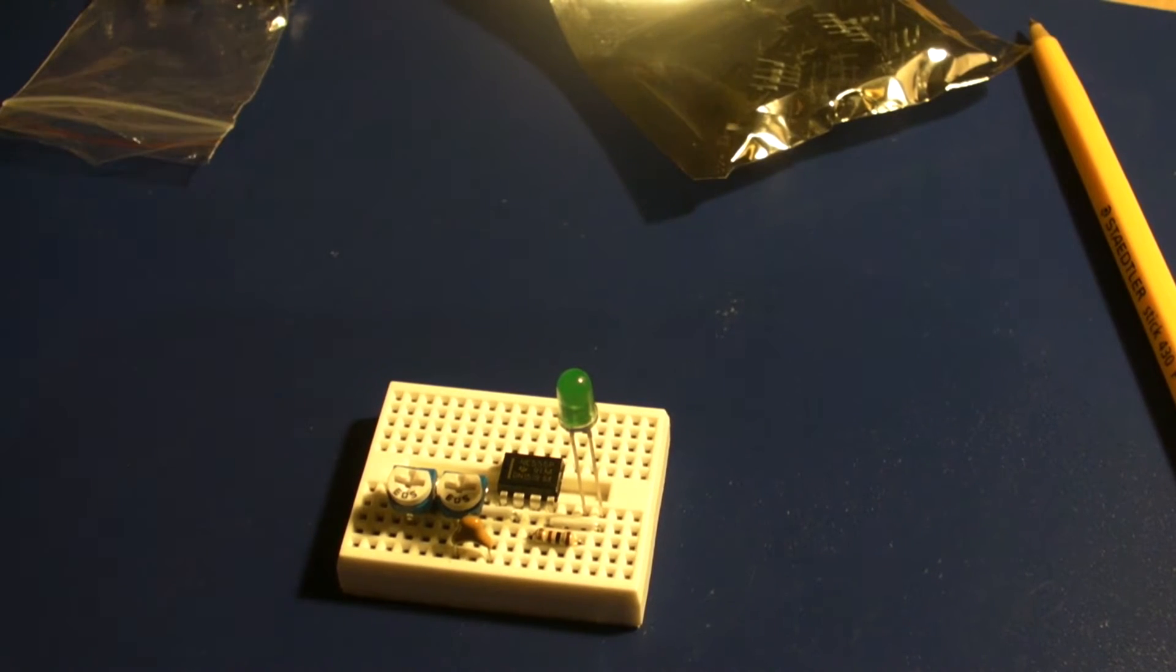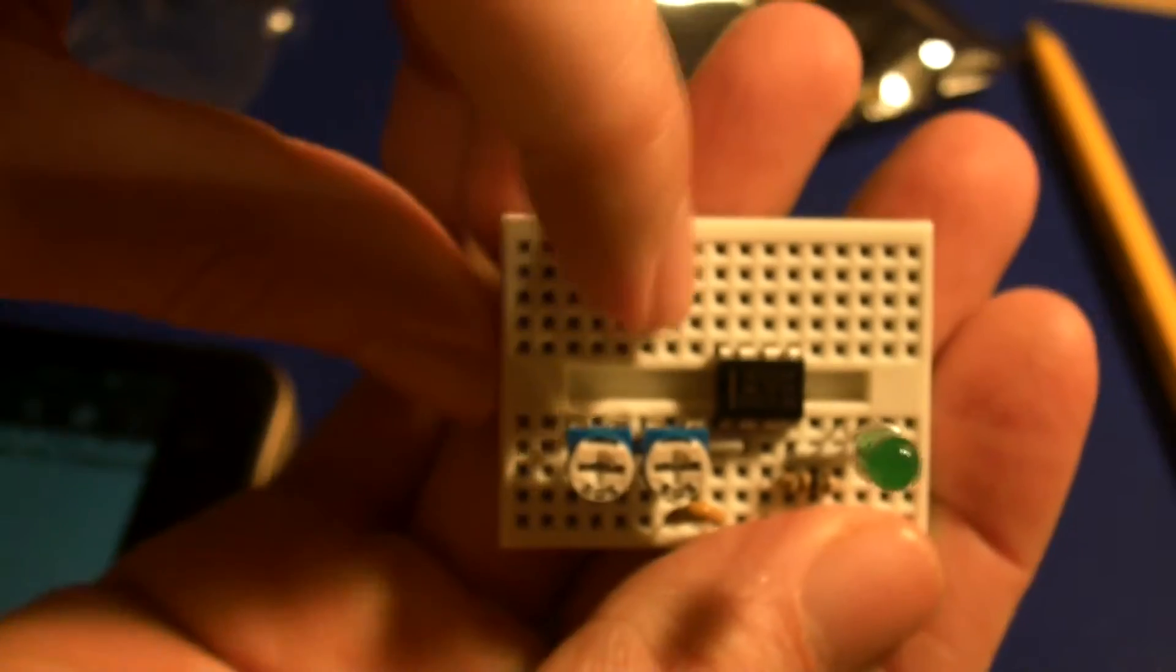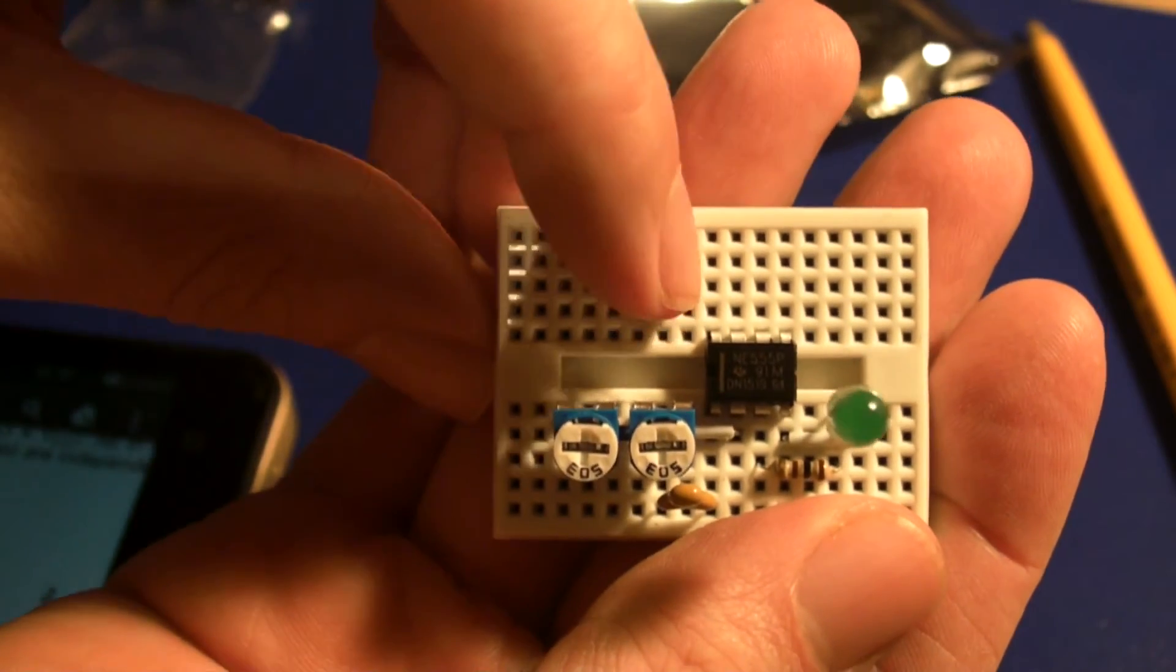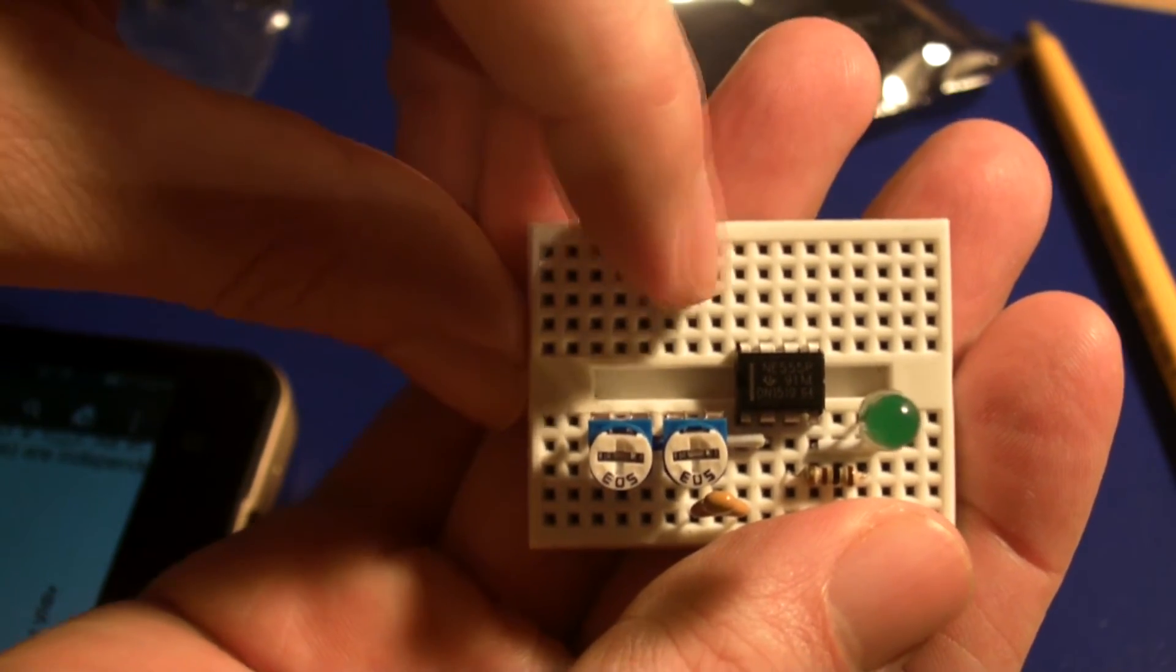So the next thing I'm going to do is plant a 0.01 microfarad capacitor between VCC and earth. And we can do that up off this top pin here, pin 8, because that is a VCC pin. So we're going to put a ground over here and we're going to put a capacitor in between.